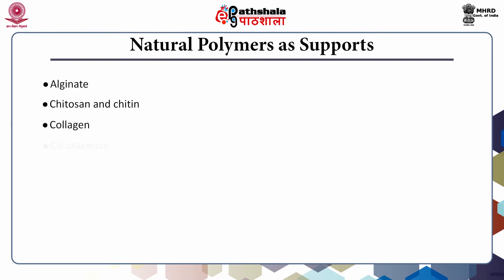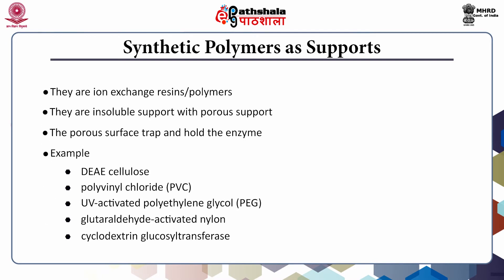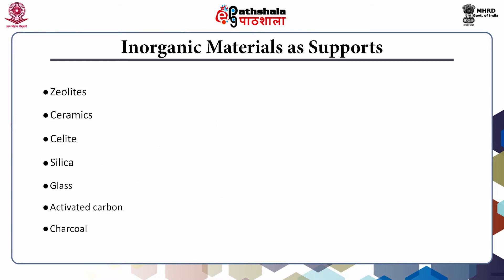Different kinds of matrices are used in immobilization. Examples of natural polymers are highlighted. Some synthetic polymers are also used as support matrices, such as DEAE, PEG, and PVP. The inorganic materials most commonly used as supports for immobilization are glass, silica, ceramics, activated carbons, and charcoal.